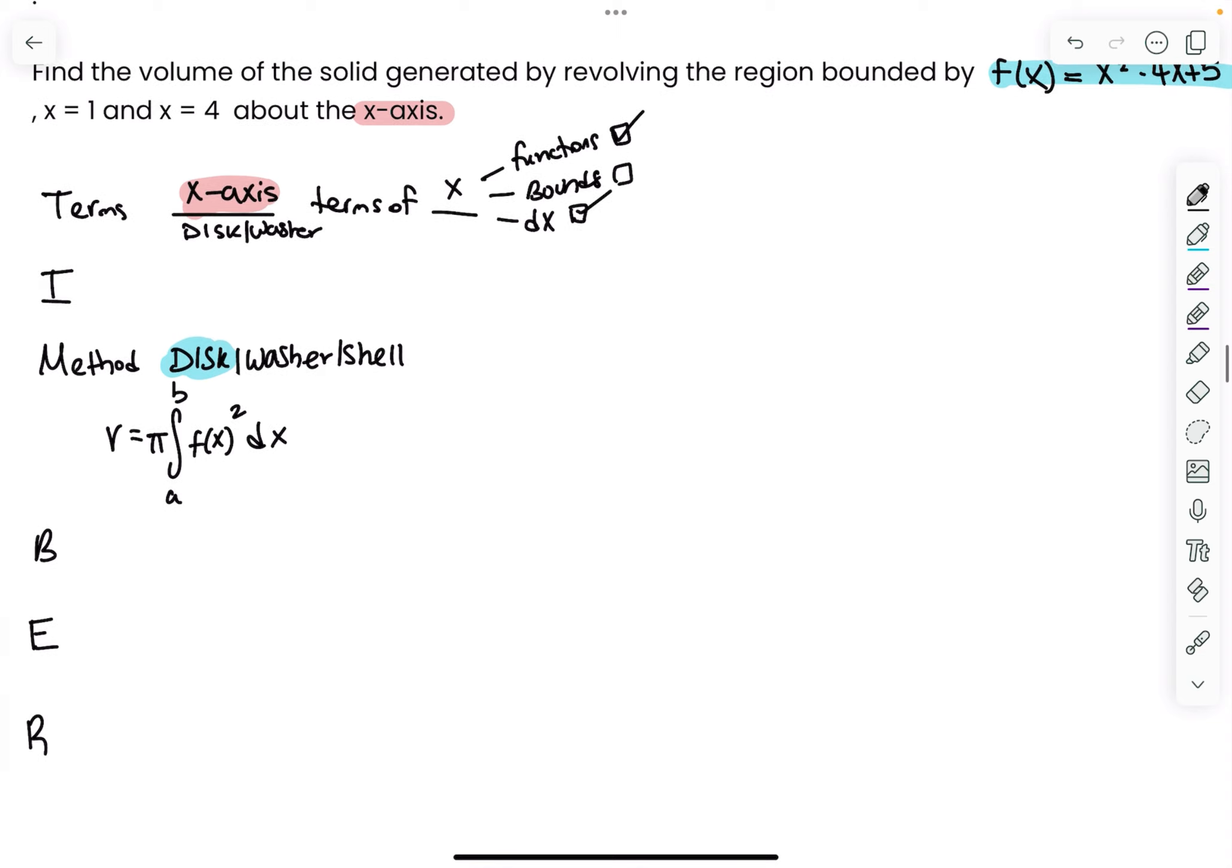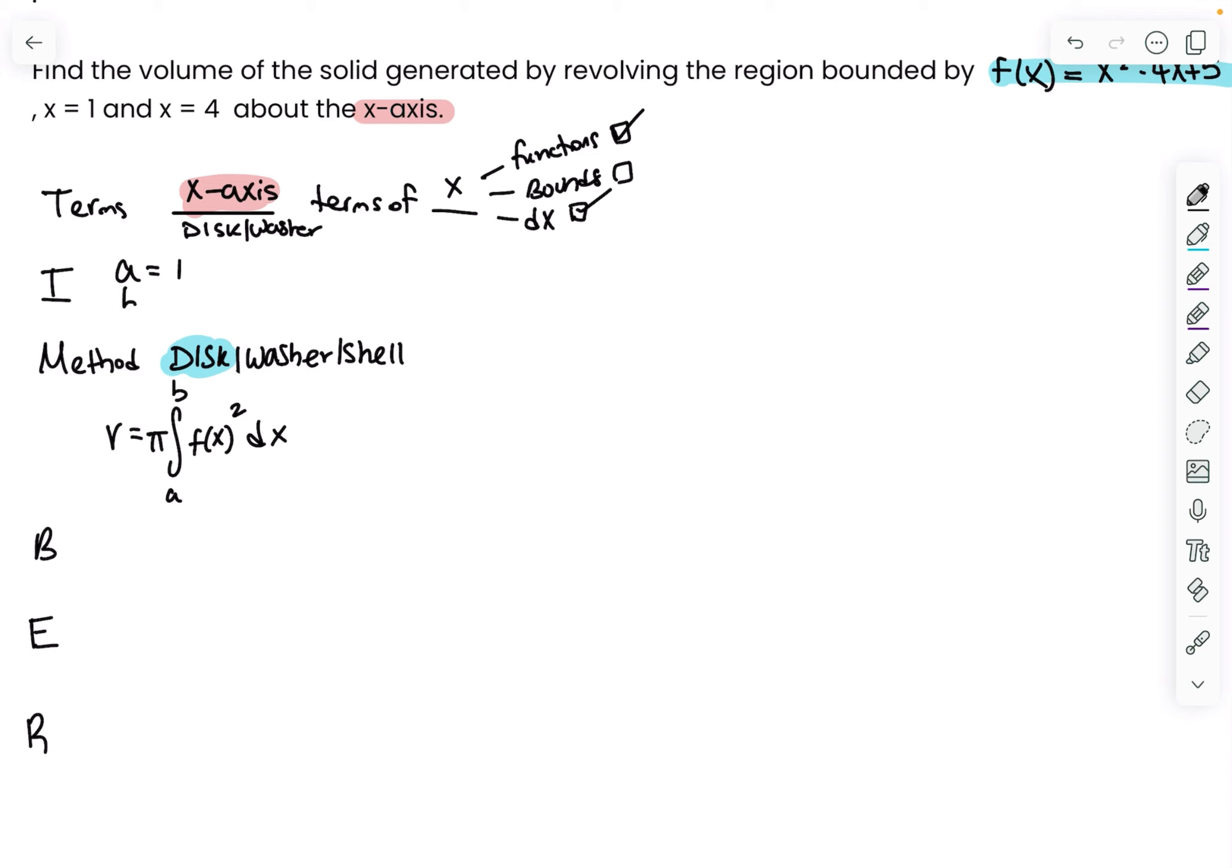The bounds also have to be in terms of x. Remember, lines are bounds. These lines they give you are already in terms of x: a equals 1 and b equals 4. So the bounds are in terms of x because it's x equals 1 and x equals 4.